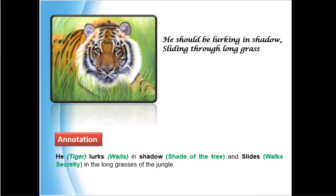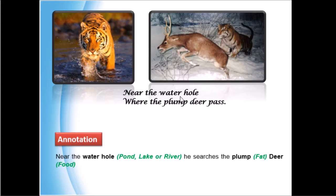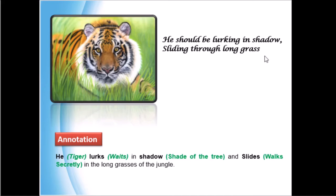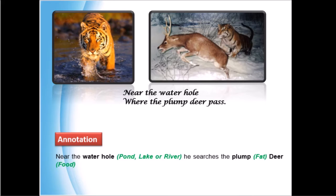Now let us go to stanza 2: 'He should be lurking in shadow, sliding through long grass, near the water hole where the plump deer pass.' Here 'he' means the tiger. 'Lurking' means to be hidden in the shadow, the shade of trees. 'Sliding' means walking slowly and unnoticed through the long grasses of the jungle. Near the water hole means near the ponds, lakes, or rivers in the forest. He searches for the well-fed, plump deer — fat food near the water.